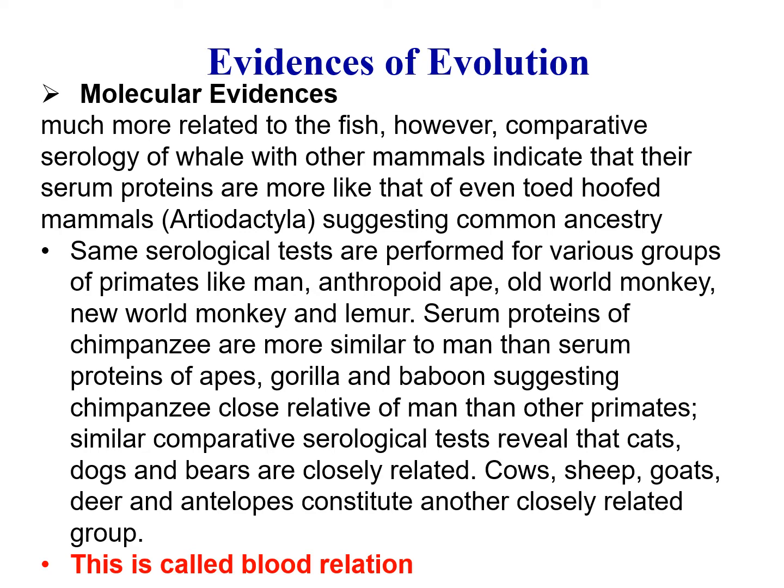Serological tests performed for various groups of primates — man, anthropoids, Old World monkeys, New World monkeys, and lemurs — show that serum proteins of chimpanzee are more similar to man than those of gorilla and baboon, suggesting chimpanzee is a closer relative of man. Similarly, comparative serological tests reveal that cats, dogs and bears are closely related, while sheep, goats, and antelopes constitute another closely related group.